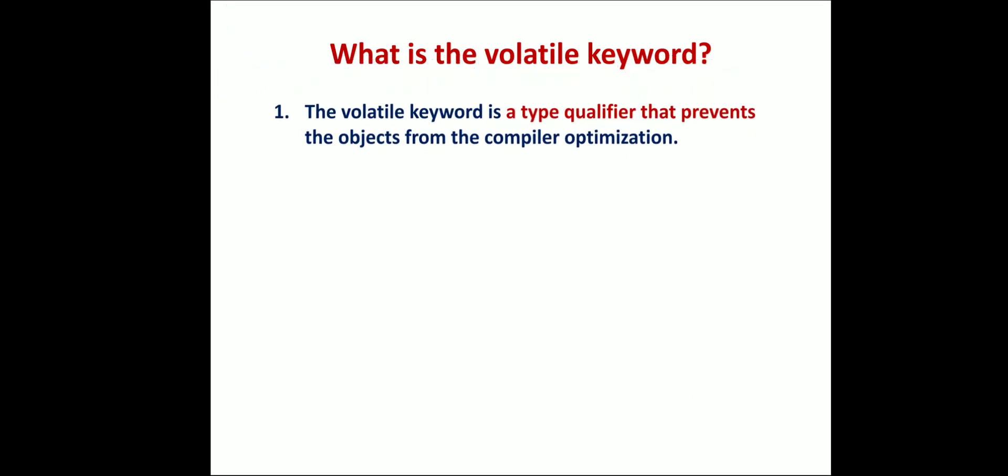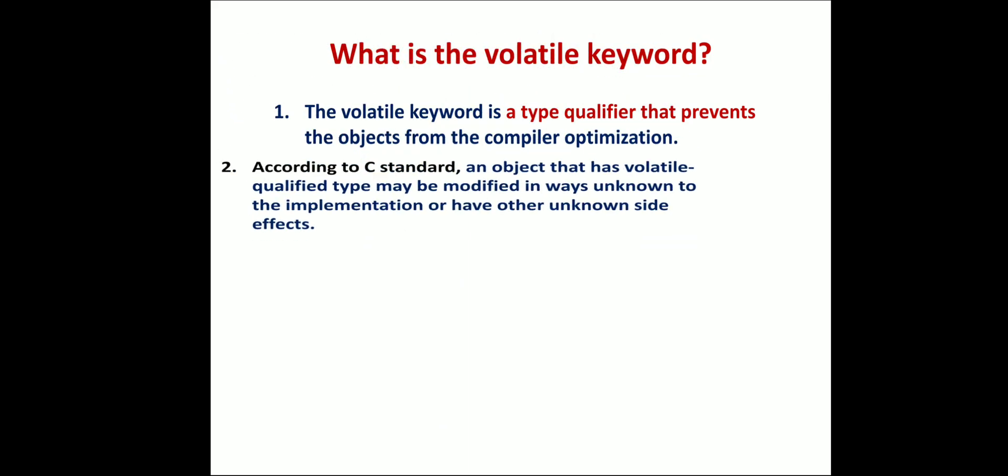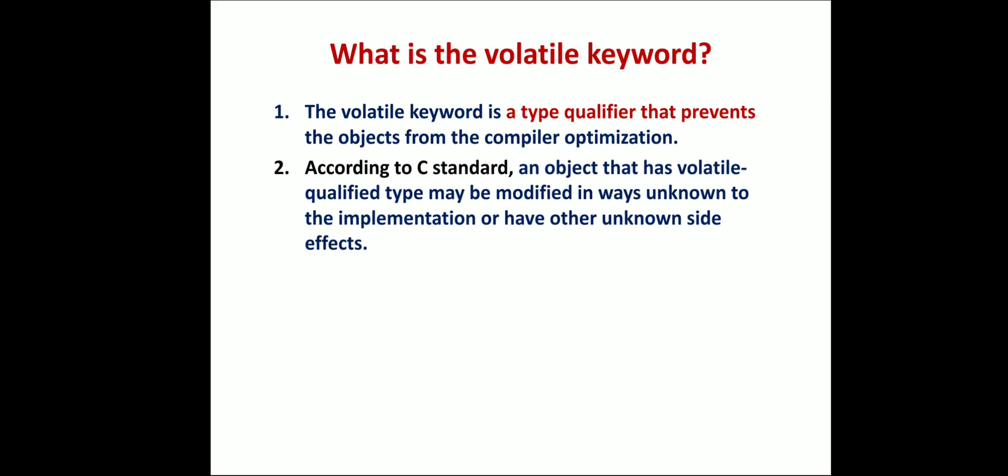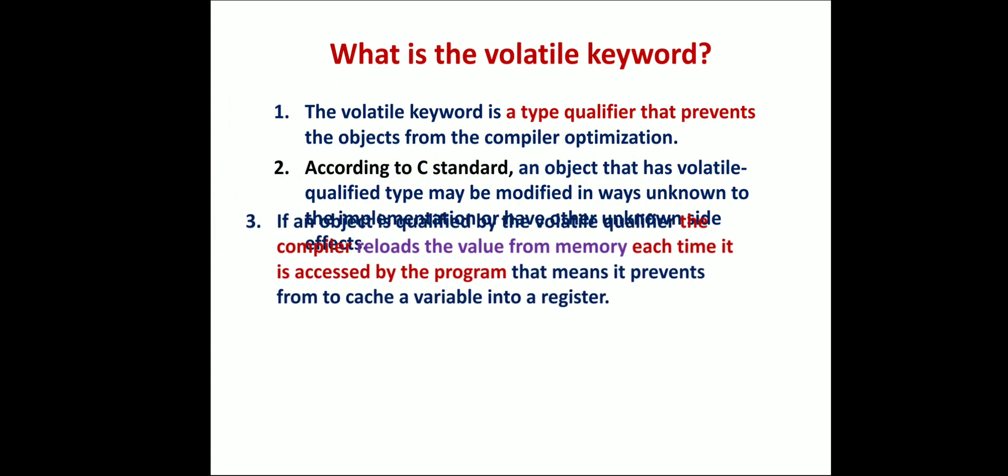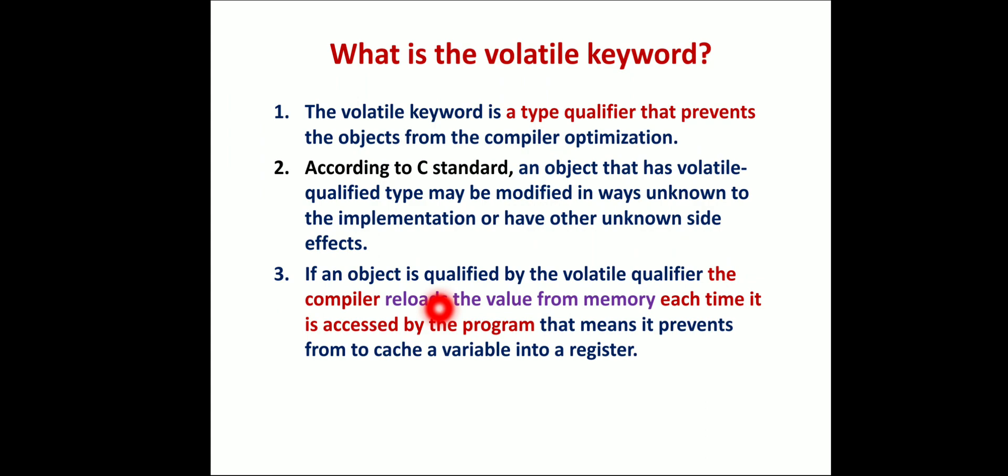What is the volatile keyword? The volatile keyword is a type qualifier that prevents objects from compiler optimization. According to C standard, an object with volatile qualified type may be modified in ways unknown to the implementation or have other unknown side effects. In simple terms, it's used to reload the value from memory each and every time.